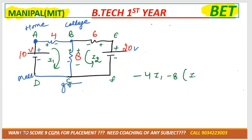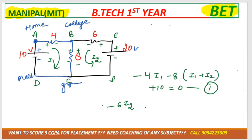Minus 4(I1) minus I1 plus — because both are in the same direction, sign is also same. That is the first mesh equation. Now tell me the second mesh equation. Minus 6 I2. Move it according to the direction of current — current is A to B to C, F to E. It's minus 8(I2 plus I1) and minus 20. Plus 20, because you have to take the second sign.